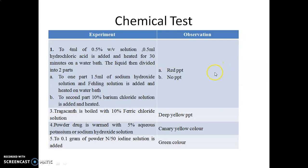For the chemical tests: 4 ml of a 0.5% w/v solution is taken; 0.5 ml of hydrochloric acid is added and heated for 30 minutes on a water bath, aiding the hydrolysis of the gum. The hydrolysate is taken in two test tubes. To the first part, 1.5 ml of sodium hydroxide solution and Fehling's solution A and B are added and heated on a water bath. Due to the presence of reducing sugars — mainly galactose — a red precipitate is observed.